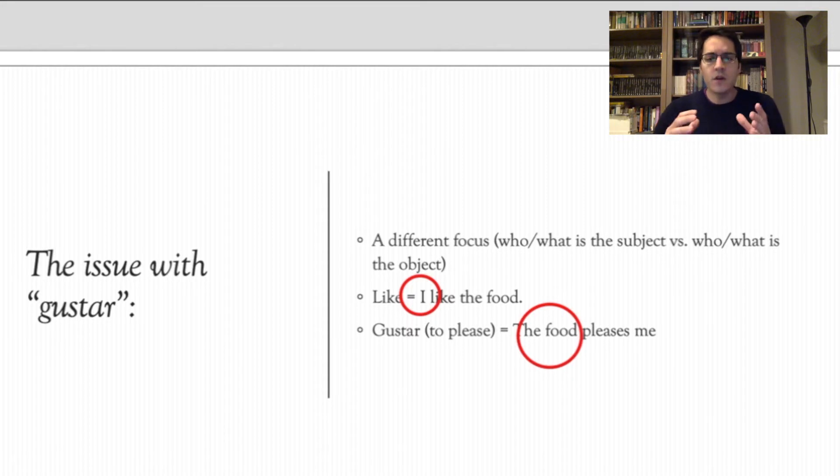The food. So notice that in the verb like, I in the subject, whereas in gustar and to please, the food is the subject. It shifts the focus. That is the source of a lot of difficulty for students.